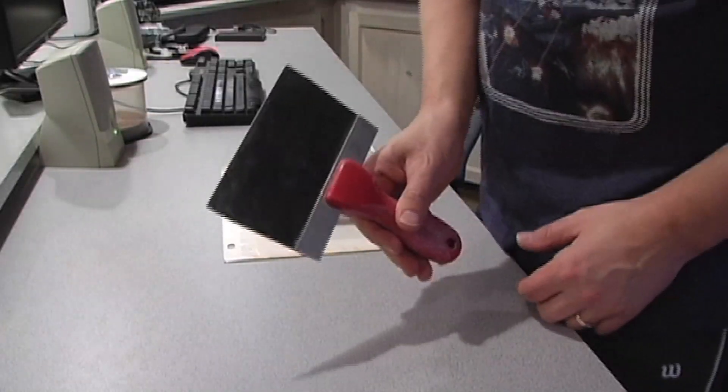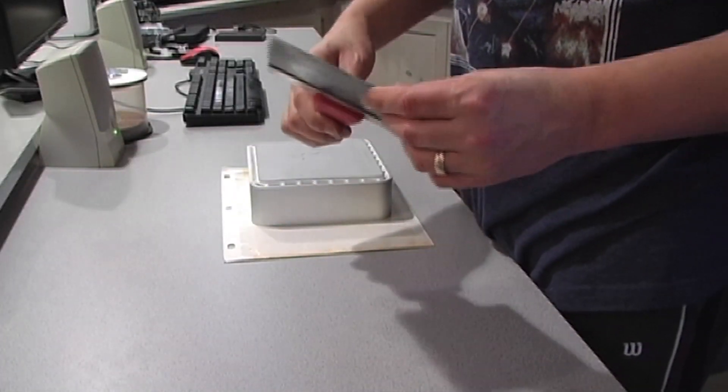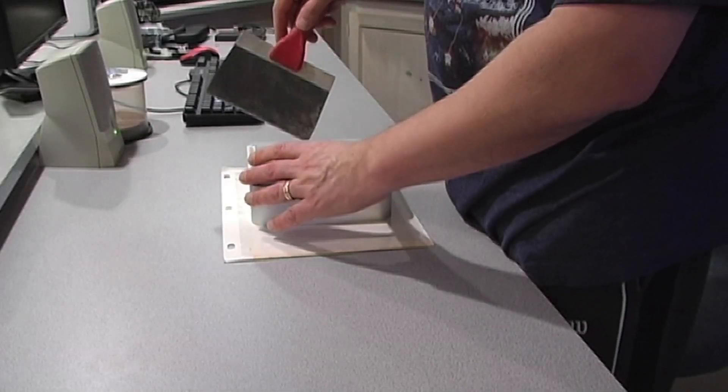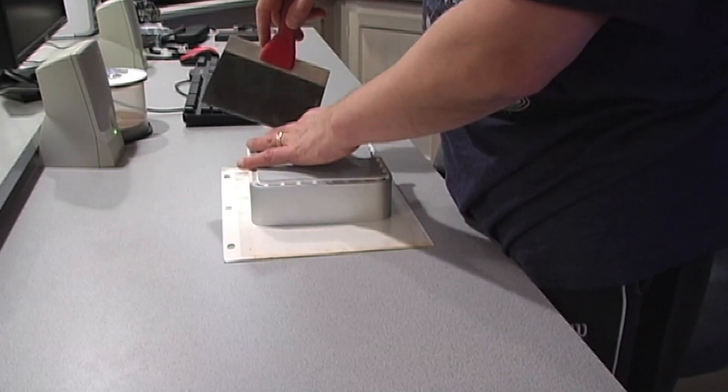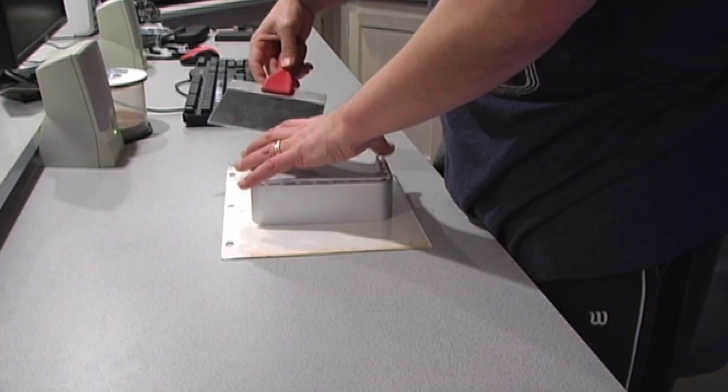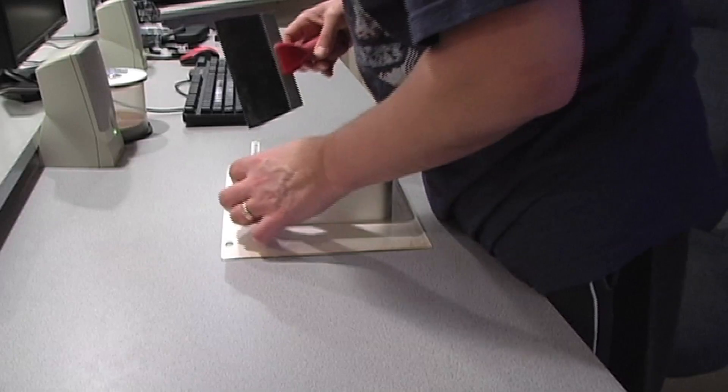First thing we have to do is get yourself a scraper with a little bit sharp edge. Put it in the side here, just pry it up lightly, get one side, try not to go back where the peripheral board is.